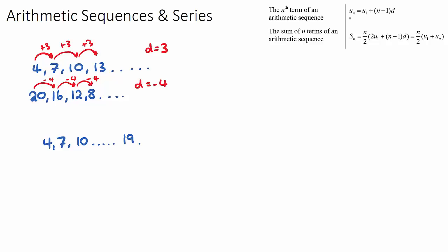We can use this formula to find any term in an arithmetic sequence. If the question asked to find the 100th term, it would take quite a long time to count manually. There is a formula for the nth term of an arithmetic sequence: Un equals the first term plus n minus 1 multiplied by our common difference.